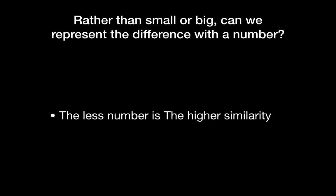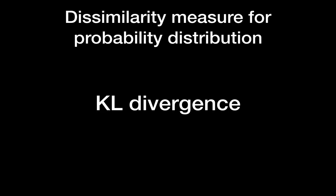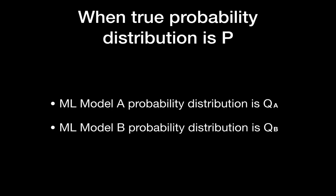We know model A has better prediction since model A has relatively less difference than model B. But rather than saying small difference or big difference, can we have a quantitative number representing the specific difference? Yes, and that number is the KL divergence.